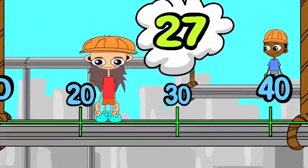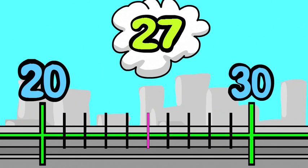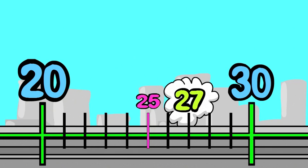Step 2: Find the midpoint between your benchmarks — that's the number that is exactly in the middle. The midpoint between 20 and 30 is 25. Step 3: Now locate 27 on the number line. You can see that 27 is more than 25. So now you're ready for Step 4.